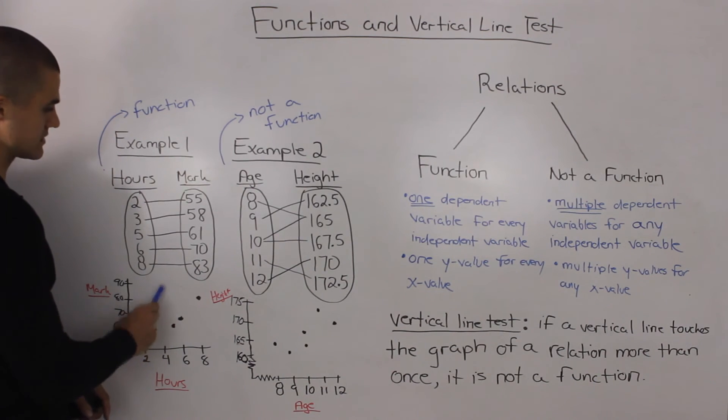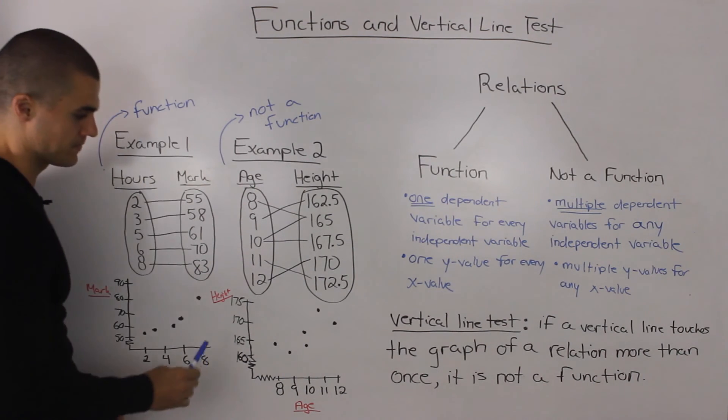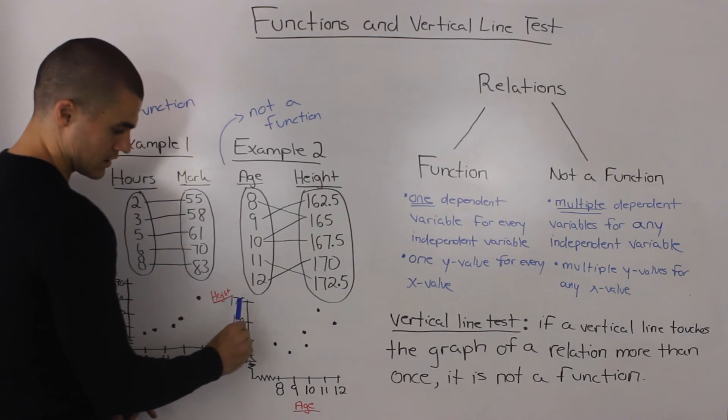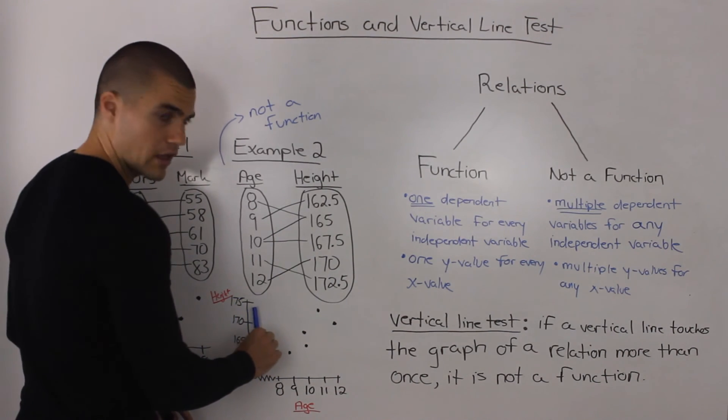Alright, so we know that this relation here is a function. However, in this graph of this relation, when we run a vertical line through it...